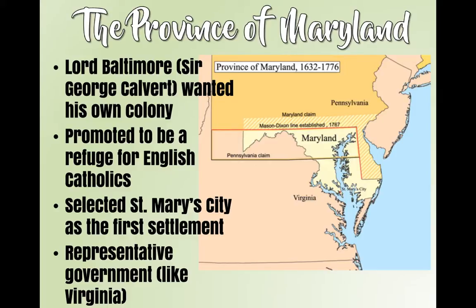Let's talk about Maryland. Maryland is going to be started by this guy named Lord Baltimore. He was an English noble — the wealthy, rich people — and he's got a pretty awesome life in England. And then he's like, 'Hey guys, I'm Catholic now.' And that's a problem, because remember our good friend King Henry VIII, who had his six wives and had a little problem with the Catholic Church because they wouldn't give him a divorce.